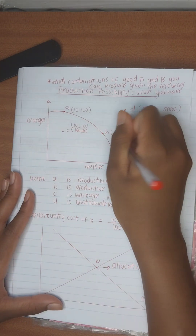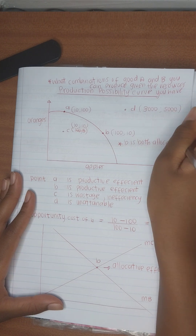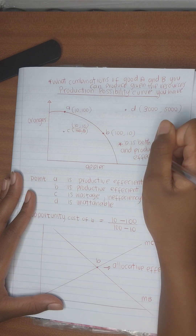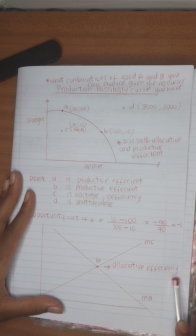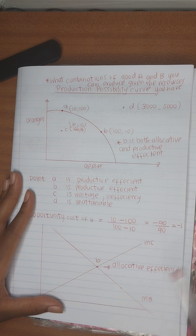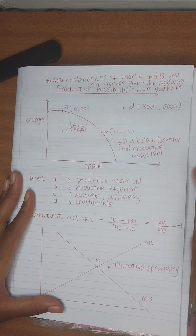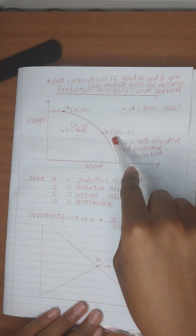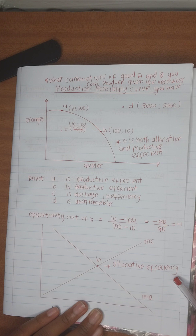B is both allocative and productive efficient. An allocative efficient point is also productive efficient, because to arrive at allocative efficiency we had to take points on the PPF — and if you are on the PPF you are already productive efficient. We drafted the MC from the PPF, then used the MB to find where they meet. So if you are on the MC you are already on the PPF, and if you are on the PPF you are productive efficient. Therefore an allocative efficient point is also productive efficient.